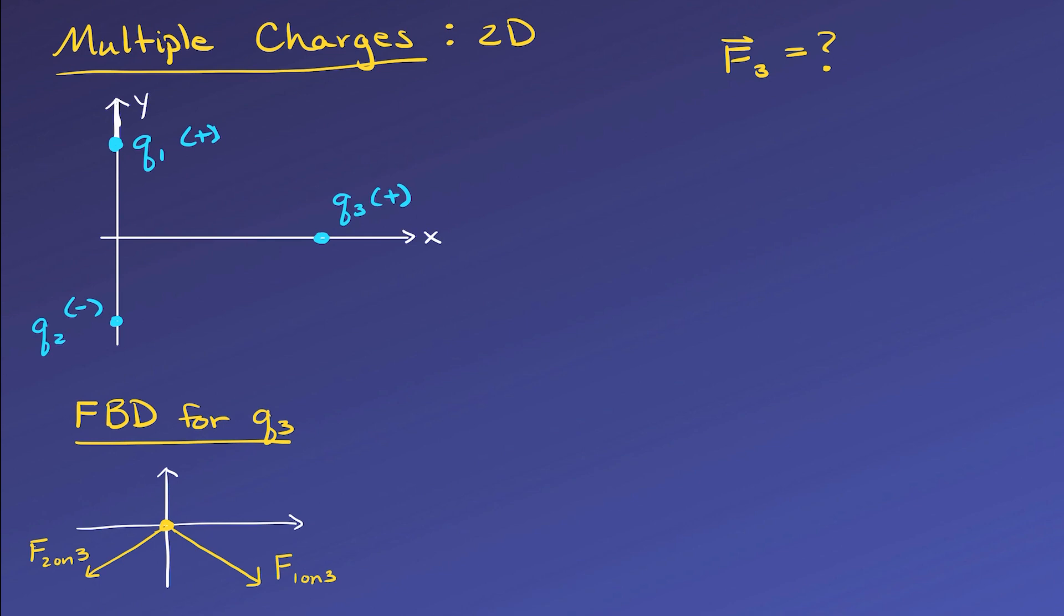You should already guess that the net force should have a downward component in the negative y direction, since both forces are pulling or pushing downward. And then if q1 and q2 have the same magnitude of charge, their x components will cancel out. And if not, the larger charge will pull it either to the left or right.